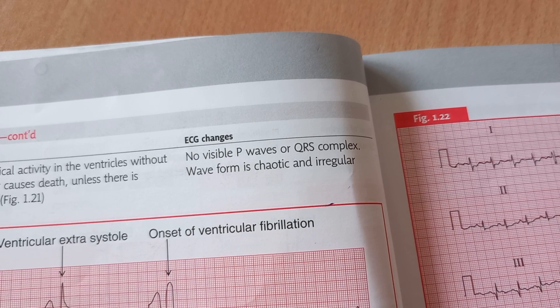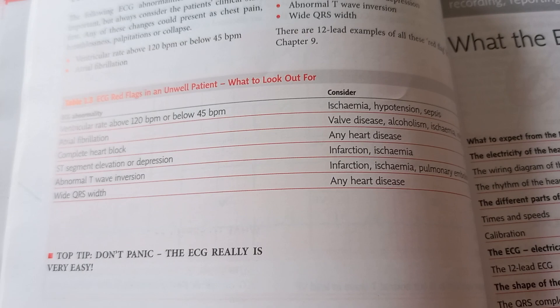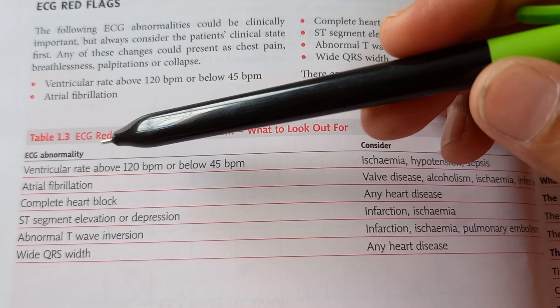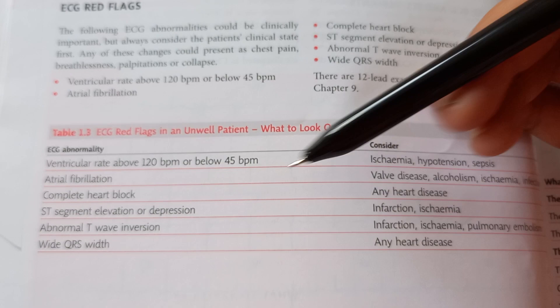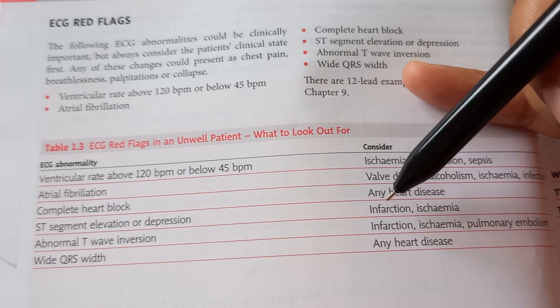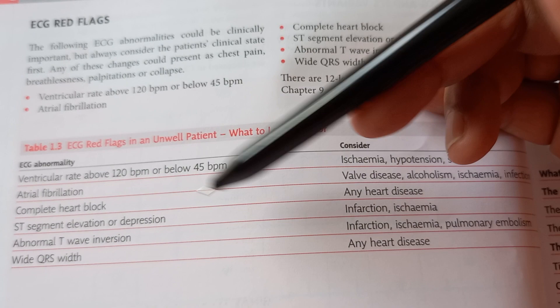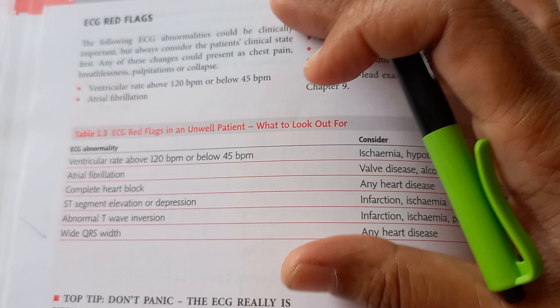They are talking about ventricular fibrillation. What do you see here? There is no visible P wave or QRS complex; it is chaotic, irregular. This also talks about the red flags you should be aware of. If the ventricular rate is above 120, atrial fibrillation if it is there, complete heart block—it can mean any heart disease. If the ST segment is elevated or depressed, it can mean myocardial infarction or ischemia. If there is abnormal T wave inversion: infarction, ischemia, pulmonary embolism. Wide QRS width if it's there: any heart disease. Red flags they are talking about.